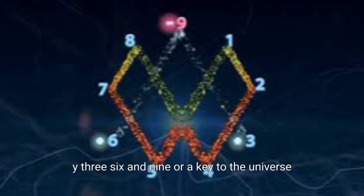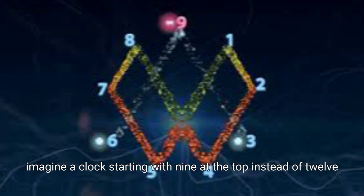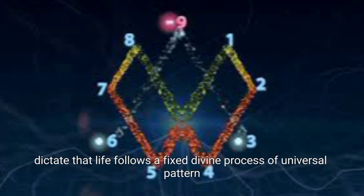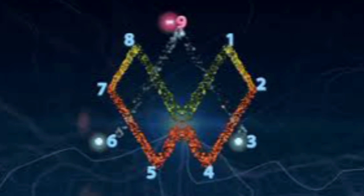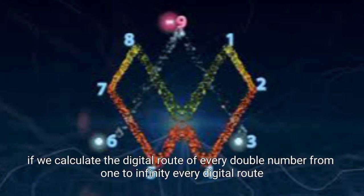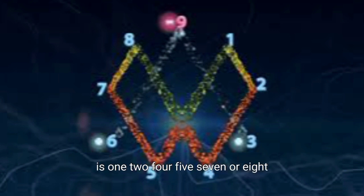Why are 3, 6, and 9 a key to the universe? Imagine a clock starting with 9 at the top instead of 12. The laws of the universe dictate that life follows a fixed, divine process of universal pattern. If we calculate the digital root of every double number from 1 to infinity, every digital root is 1, 2, 4, 5, 7, or 8.